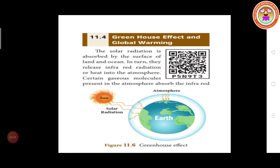The solar radiation is absorbed by the surface of land and the ocean. The heat from the sun — the solar radiation in the form of light — is absorbed by the surface of land and the ocean. In turn, there is infrared radiation or heat from the sunlight, and we get the infrared radiation or heat into the atmosphere.